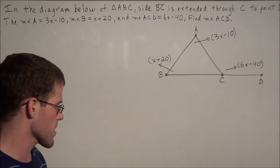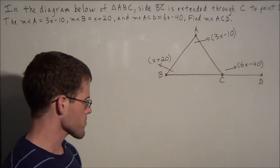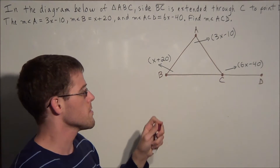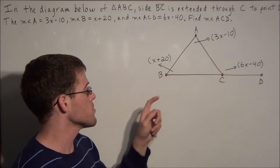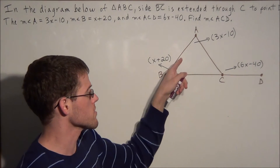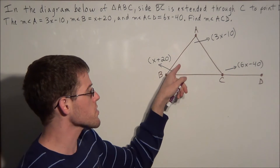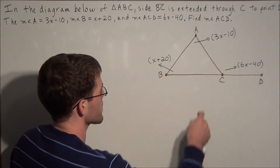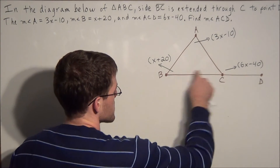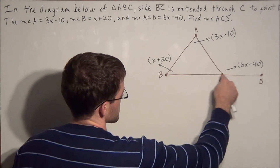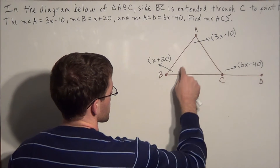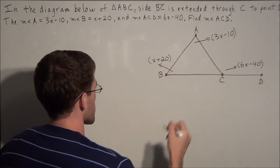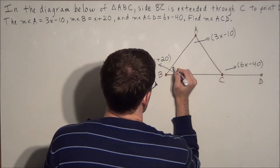The exterior angles theorem states that the measure of an exterior angle is equal to the sum of the two non-adjacent interior angles. Notice how angle ACB would be adjacent to angle ACD, so we are focusing on the two non-adjacent angles.